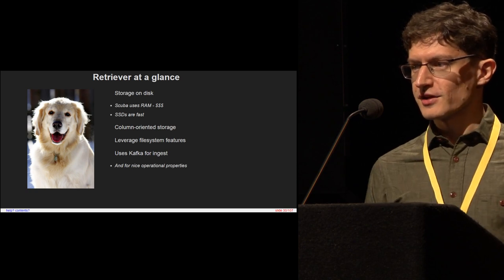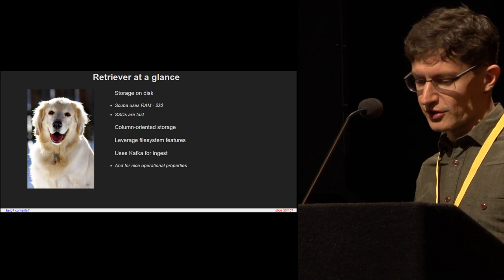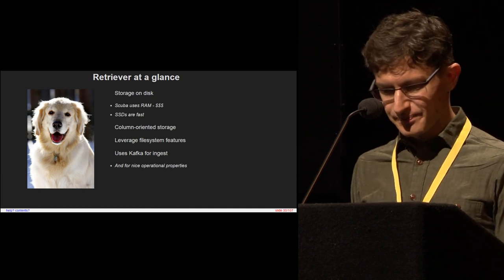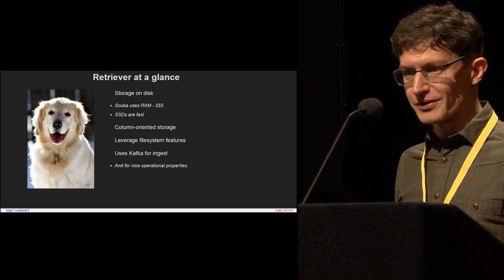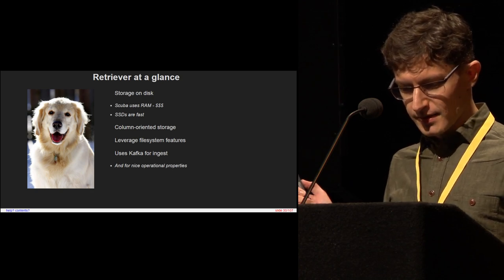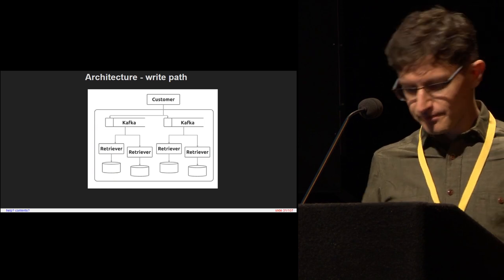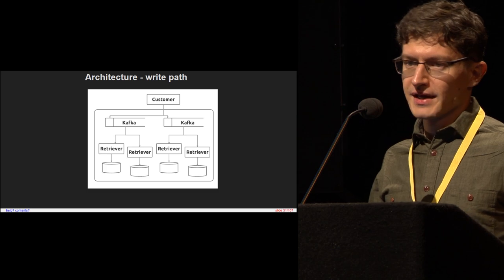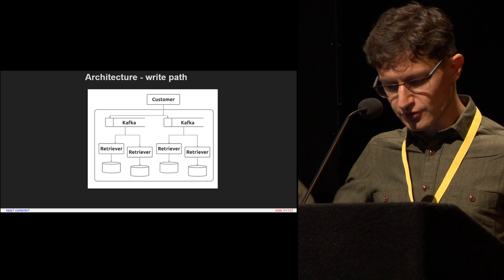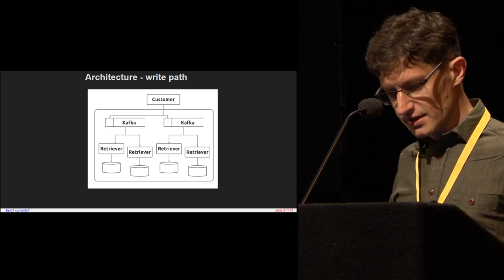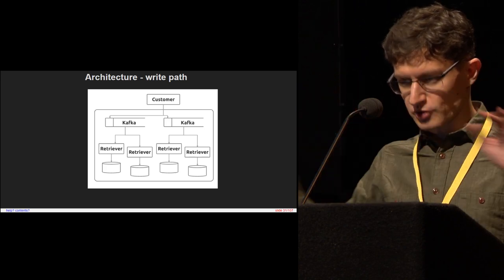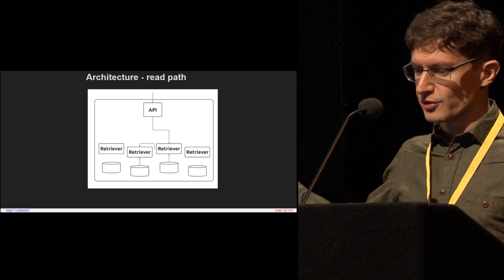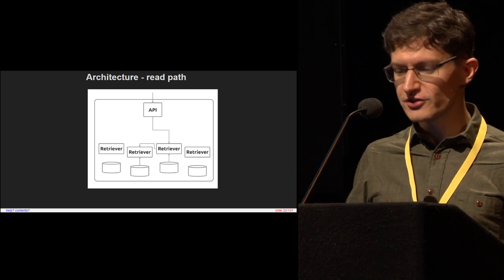We can lean on the file system for a lot of the semantics that we need from the data store, so we don't have to build them ourselves. File systems are decades-old, mature technology written by kernel hackers, and I'd much rather trust them than any code that I wrote. Similarly, I'd much rather trust Kafka than any code I wrote. At an enormously high level, here's what Retriever looks like: a customer sends us data, we write it into Kafka, we have Retriever nodes running as consumers on the Kafka queue. They read off the data as it comes in and store it to disk. We have them operating in pairs for replication, and Kafka is partitioned, so we store events across multiple nodes. When we need to read it, the customer issues a query to our API, which talks directly to Retriever, which processes and fans out the query.